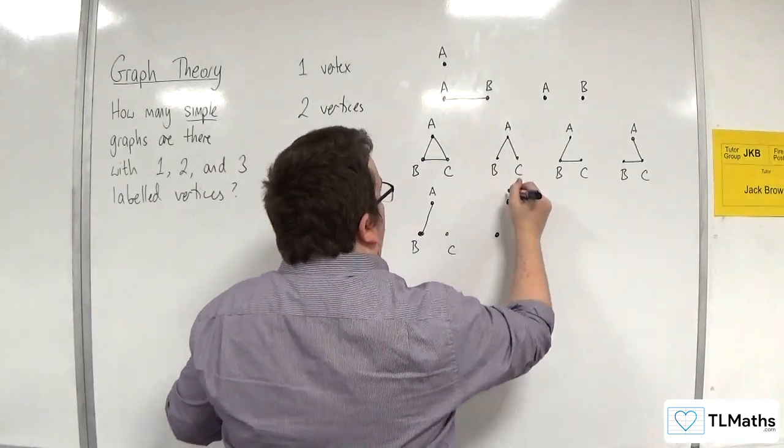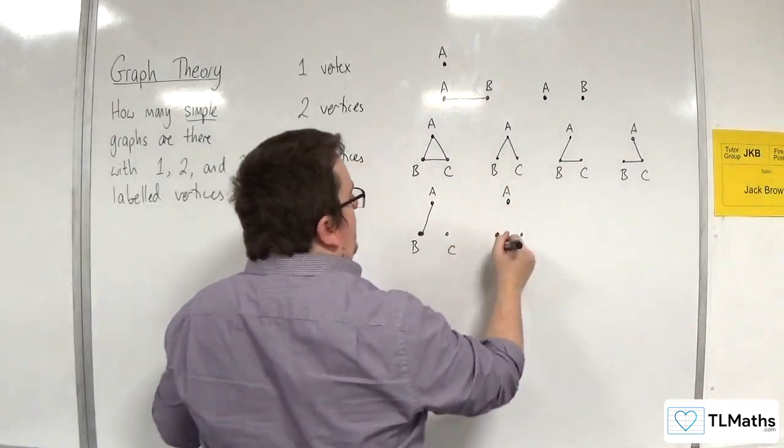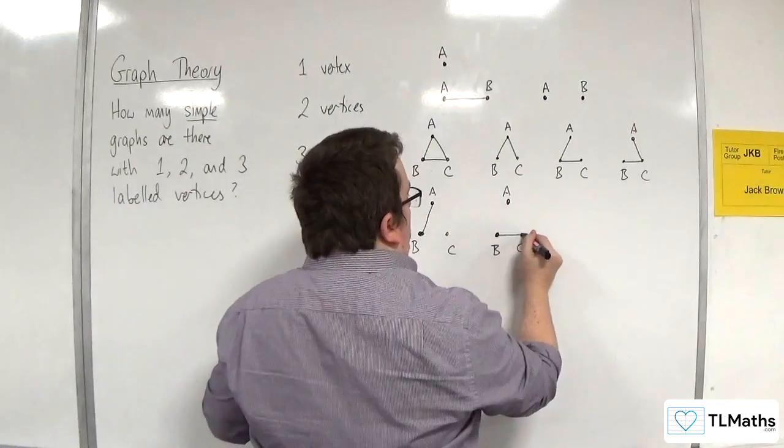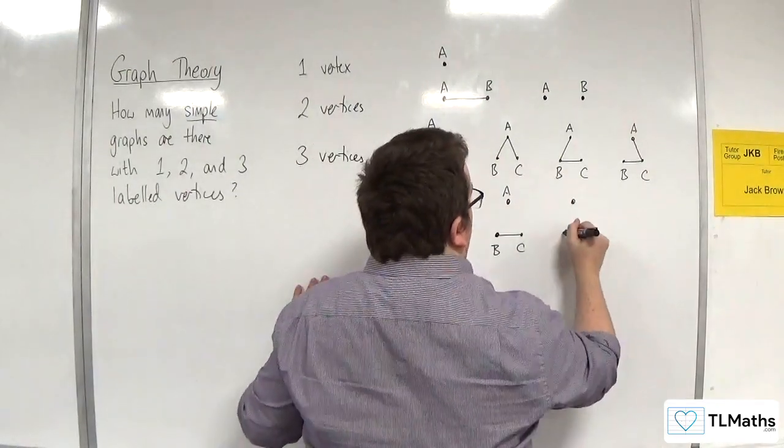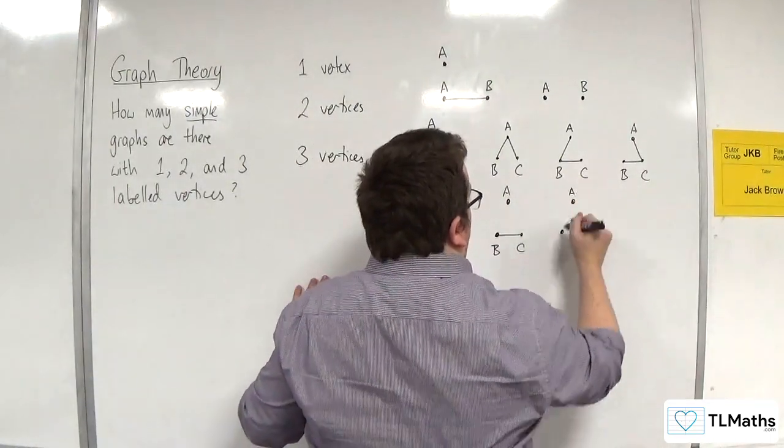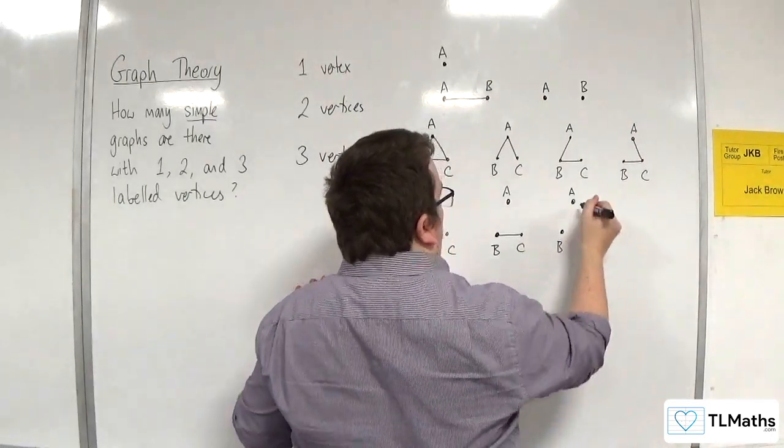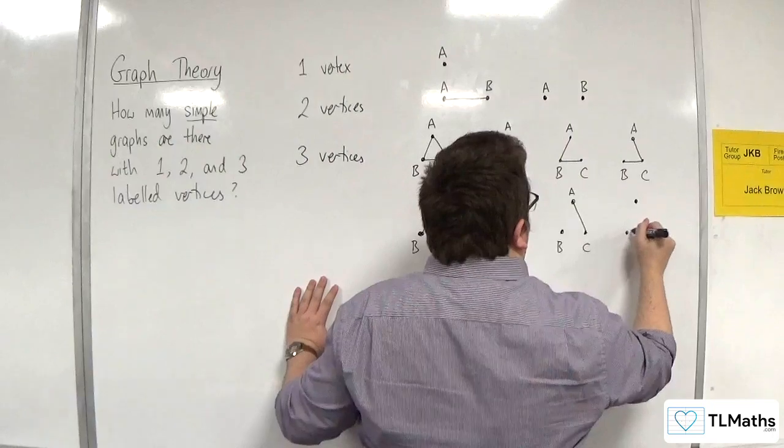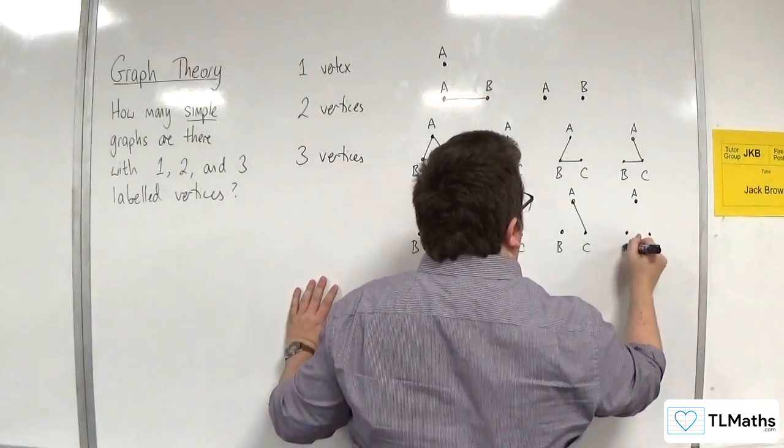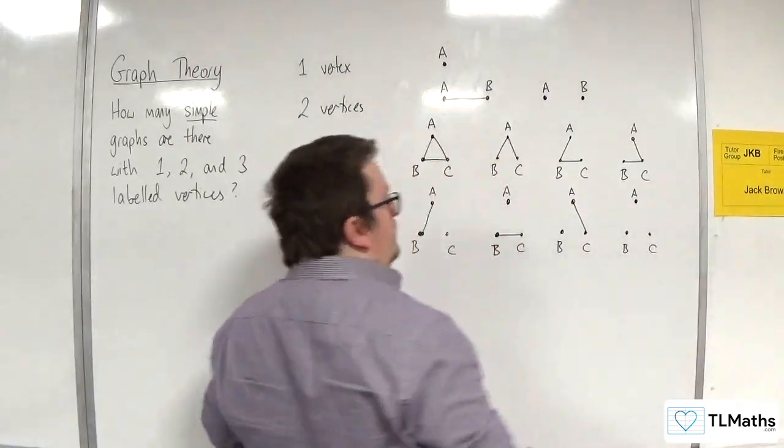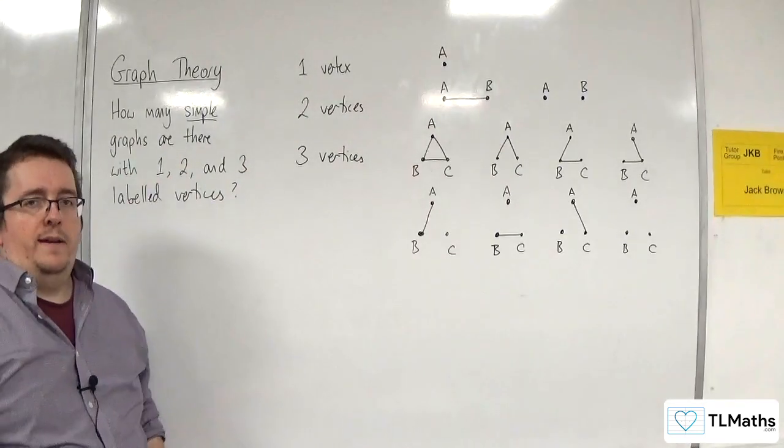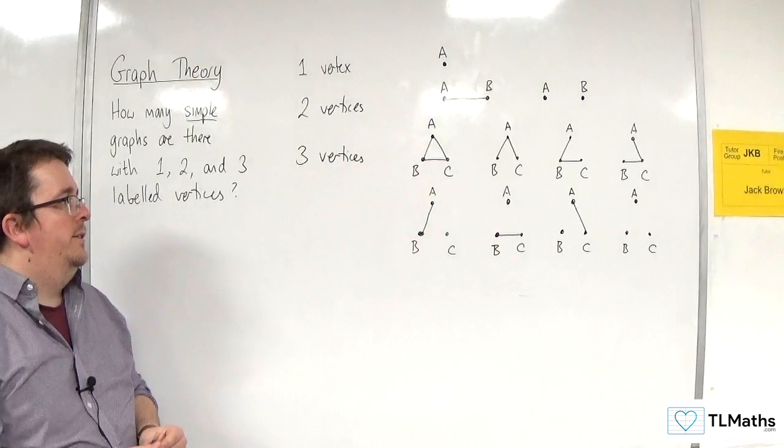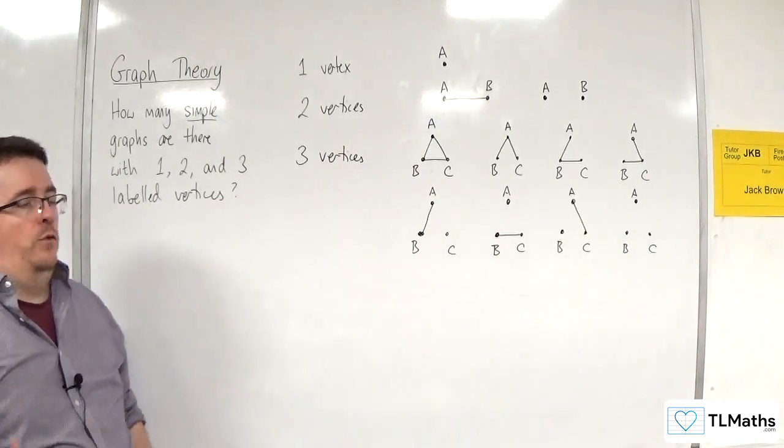So, that's now disconnected, in this case, because C is not connected to either A or B. Or, we could have that one. Or, we could have that one. Or, none of them are connected to one another. And so, actually, there are eight different ones that you could have for three vertices.